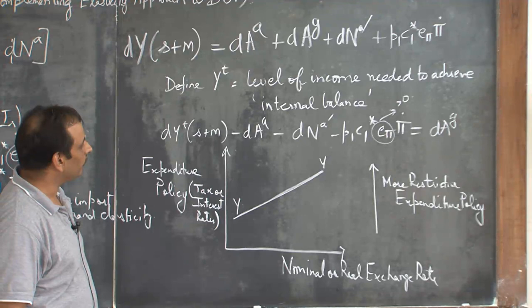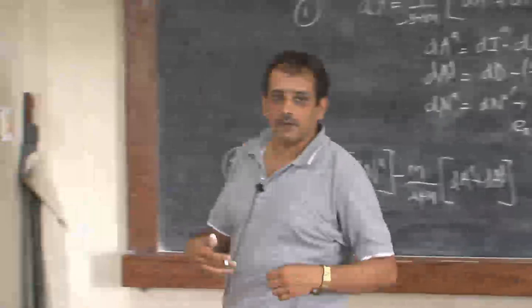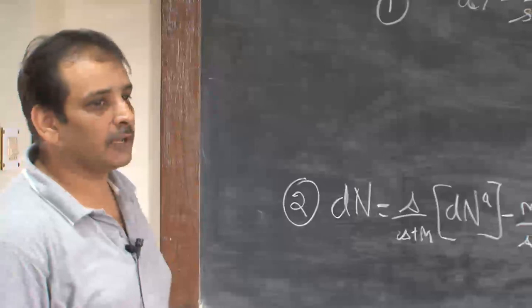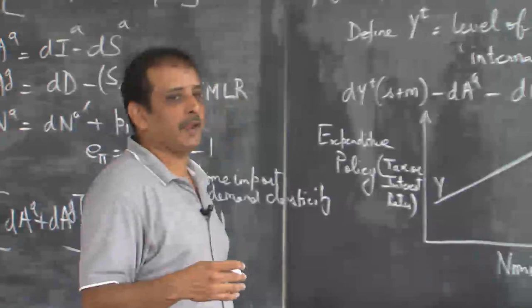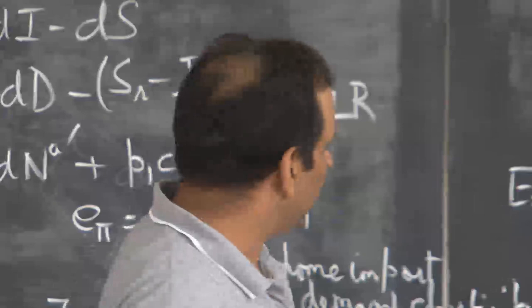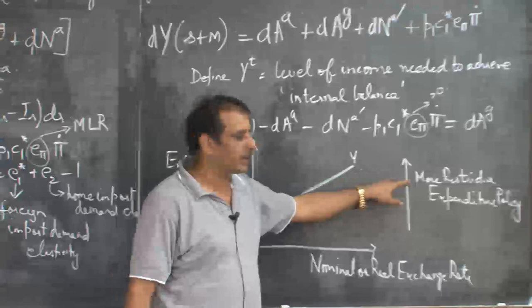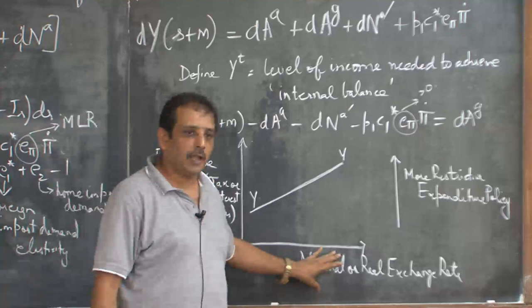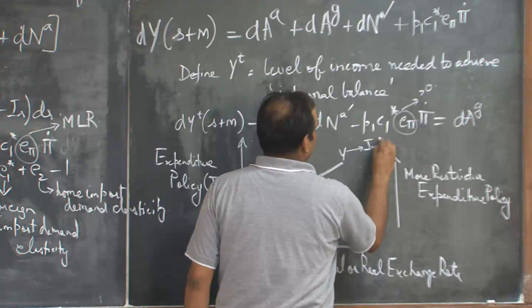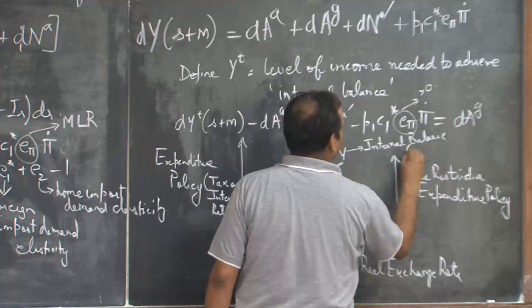The economic interpretation is: if there is devaluation, there will be a switch in expenditure from foreign to home goods. As soon as it is done, it leads to an increase in incomes. If incomes go up, the only way to bring income back to equilibrium or to have internal balance is to increase tax rates or interest rates or adopt more restrictive expenditure policies. Therefore, you see an upward-sloping YY curve showing different combinations of expenditure policy and exchange rate which will give you internal balance. This is the internal balance curve.